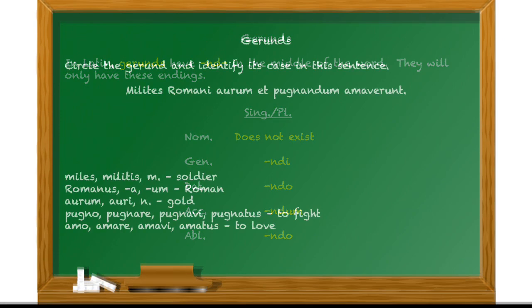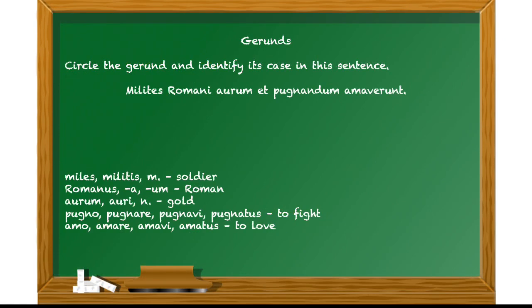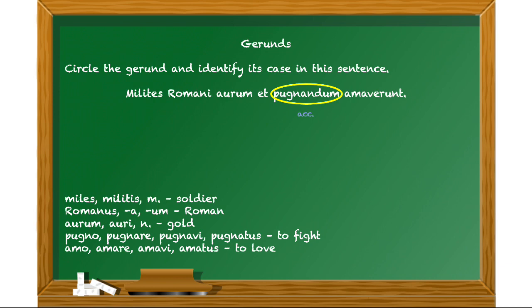Let's take a look at a sample sentence. Go ahead and copy this sentence, then circle the gerund and identify its case. Pause the video and press play when you're ready. You should have circled 'pugnandum' — we see the 'nd' in the middle of the word, and the ending is 'ndum', which makes it accusative case.